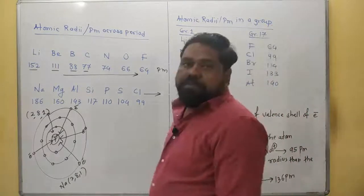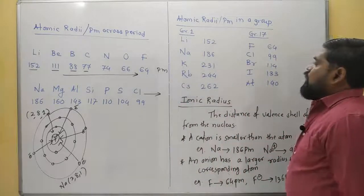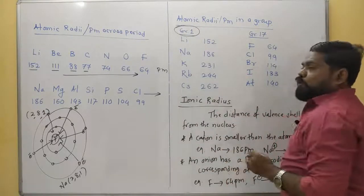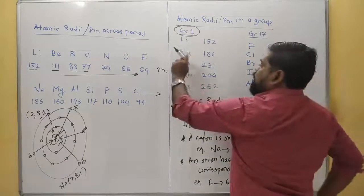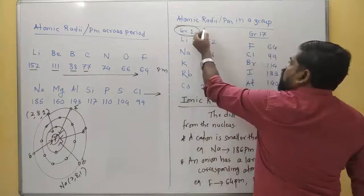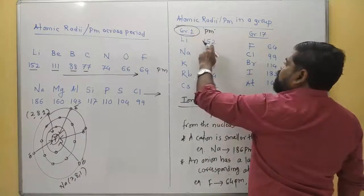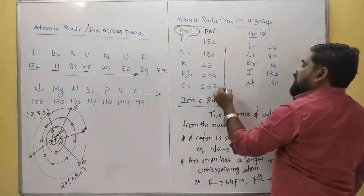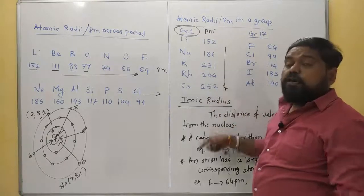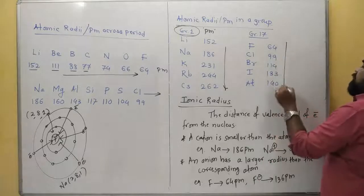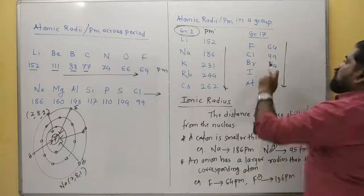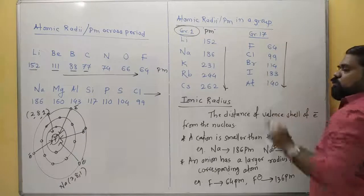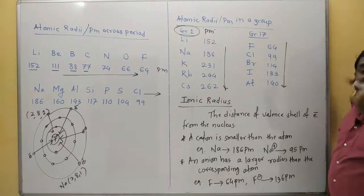Now let's see what happens in case of a group — atomic radii in picometers in a group. For group 1, the alkali metals: lithium, sodium, potassium, rubidium, cesium — values are 152, 186, 231, 244, 262 — values are going on increasing as we come down. This is happening in group number 1. For group number 17, the halogens, atomic radii also go on increasing: 64, 99, 114, 133, and 140.